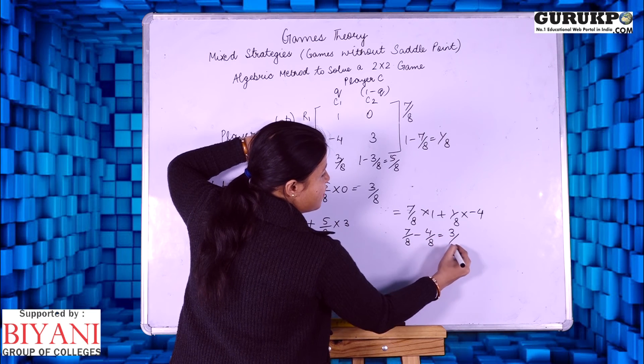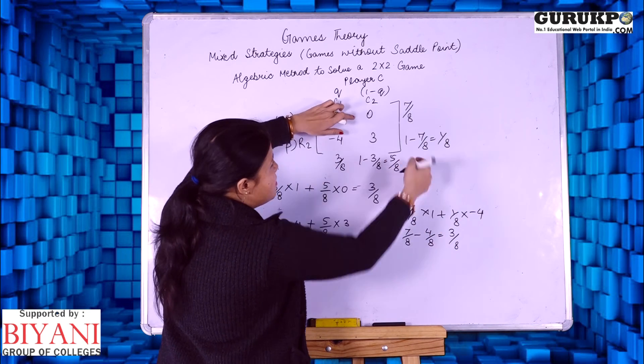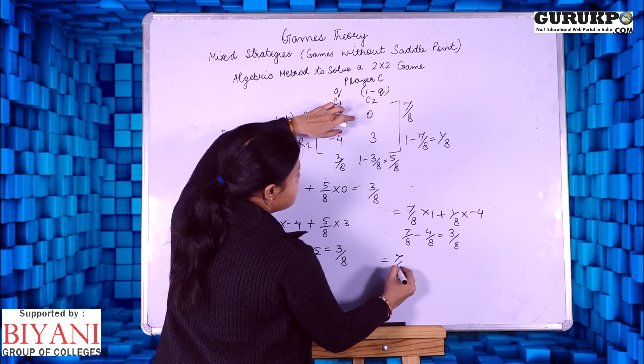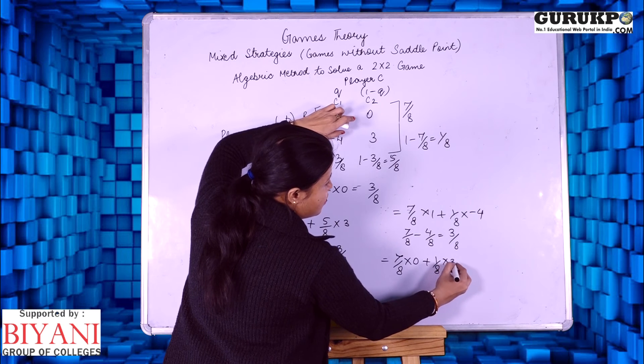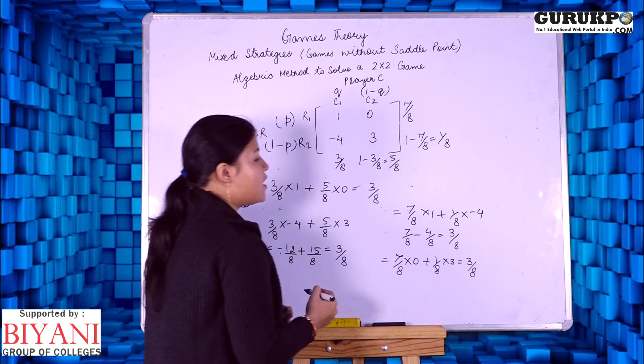If I will again take the same strategy for this: 7 by 8 into 0 plus 1 by 8 into 3. Again, the value of game comes at 3 by 8.